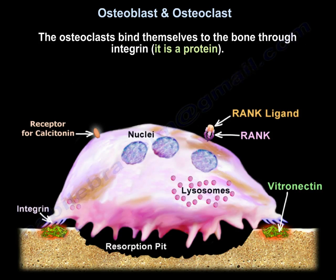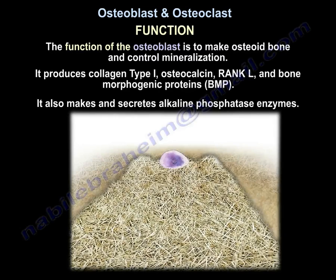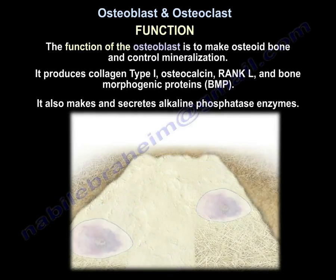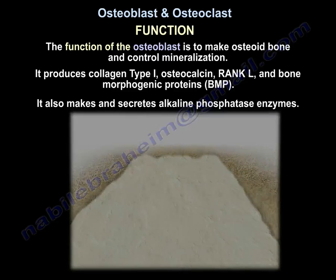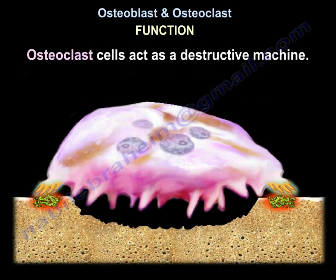The Osteoclast binds itself to the bone through integrin, which is a protein. The function of the Osteoplast is to make osteoid bone and control mineralization. Osteoplast produces collagen type 1, osteocalcin, Rank-L, and BMP, and makes and secretes alkaline phosphatase enzyme.